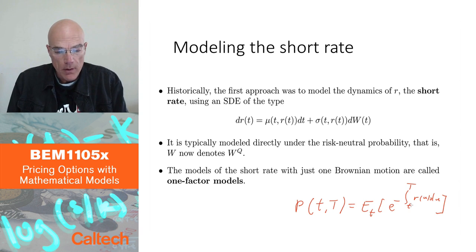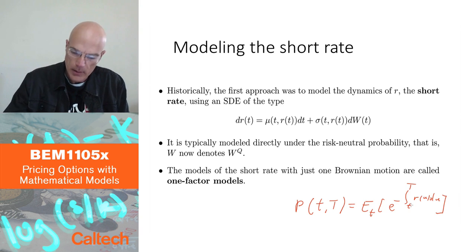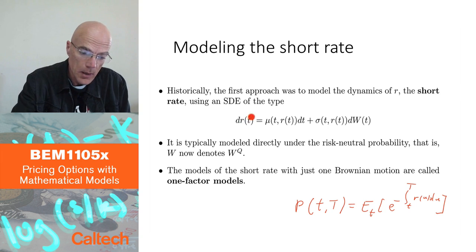All right. So, in general, that model is going to look like this first equation up here. It's going to be, dr is going to be some function mu, deterministic function mu of t and r t dt,